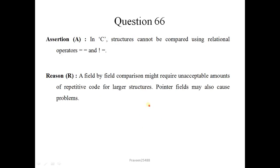Next question is 66. In C, structures cannot be compared using relational operators. And reason is a field by field comparison might require unacceptable amounts of repetitive code for larger structures. Pointer fields may also cause problems. This is correct but assertion is not. Correct option is 4.